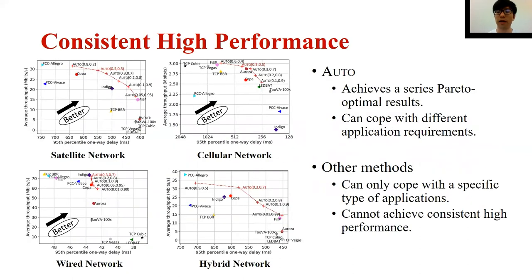We first evaluate the performance in four different and representative environments. As shown by the red lines, by inputting different preferences, AUTO achieves a series of Pareto-optimal results. Specifically, with a large throughput weight, AUTO achieves higher throughput but also higher end-to-end delay. In contrast, with a large delay weight, AUTO achieves lower latency but also lower throughput. Therefore, AUTO can cope with different application requirements. In contrast, other methods can only achieve a single result in each environment and can only cope with a specific type of application.